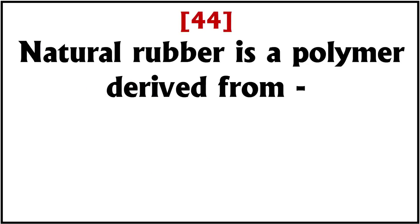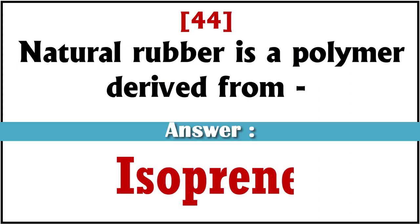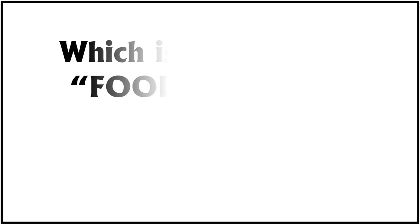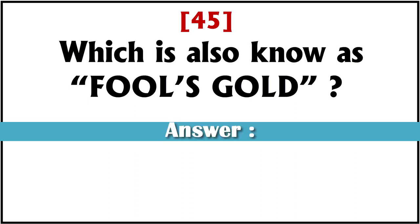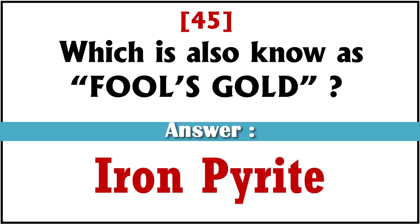Natural rubber is a polymer derived from? Answer: isoprene. Which is also known as fool's gold? Answer: iron pyrite.